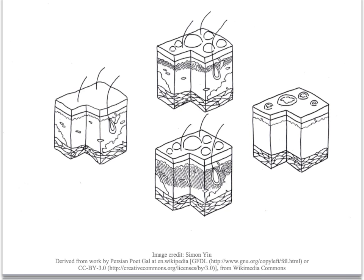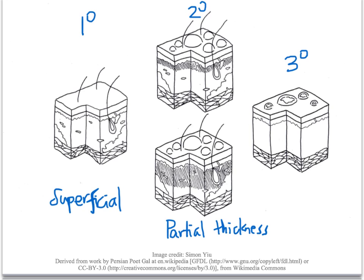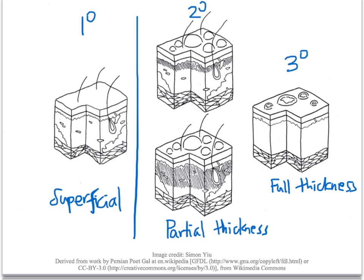Burns are traditionally classified based on the depth of skin involved — into first degree, second degree, and third degree. This is the older classification. The newer classification separates burns into superficial, partial thickness, and full thickness, which closely correspond: first degree is superficial, second degree is partial thickness, and third degree is full thickness.